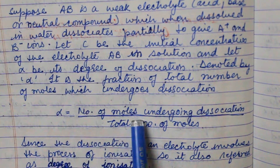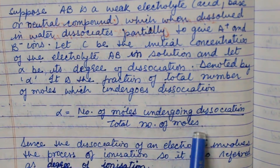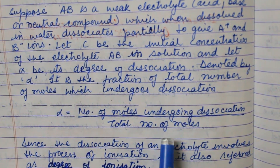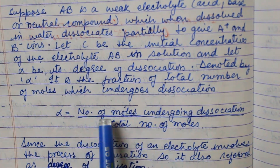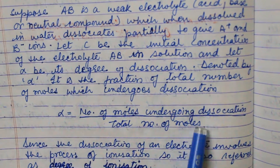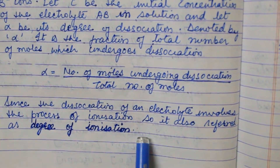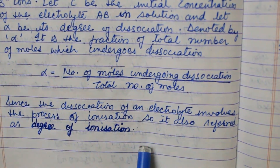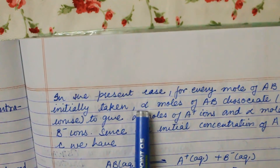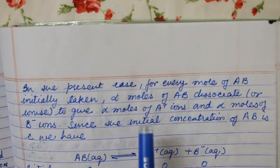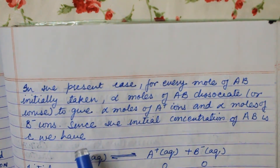Alpha is the fraction of the total number of moles which undergoes dissociation: alpha equals the number of moles undergoing dissociation divided by the total number of moles. The moles dissociated become the numerator and total moles the denominator. Since dissociation involves ionization, alpha is also referred to as the degree of ionization. For every mole of AB initially taken, alpha moles of AB dissociate to give alpha moles of A⁺ and alpha moles of B⁻.